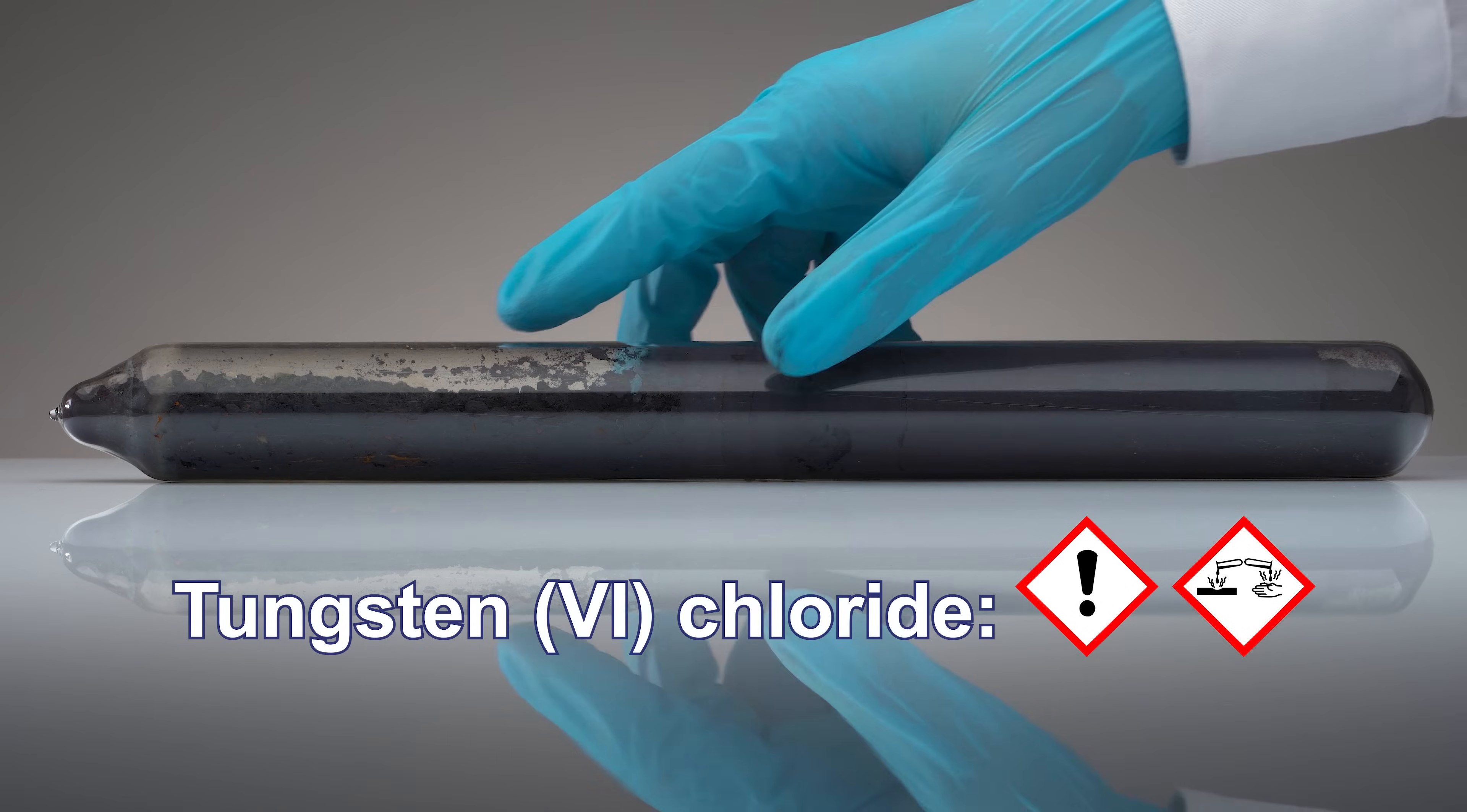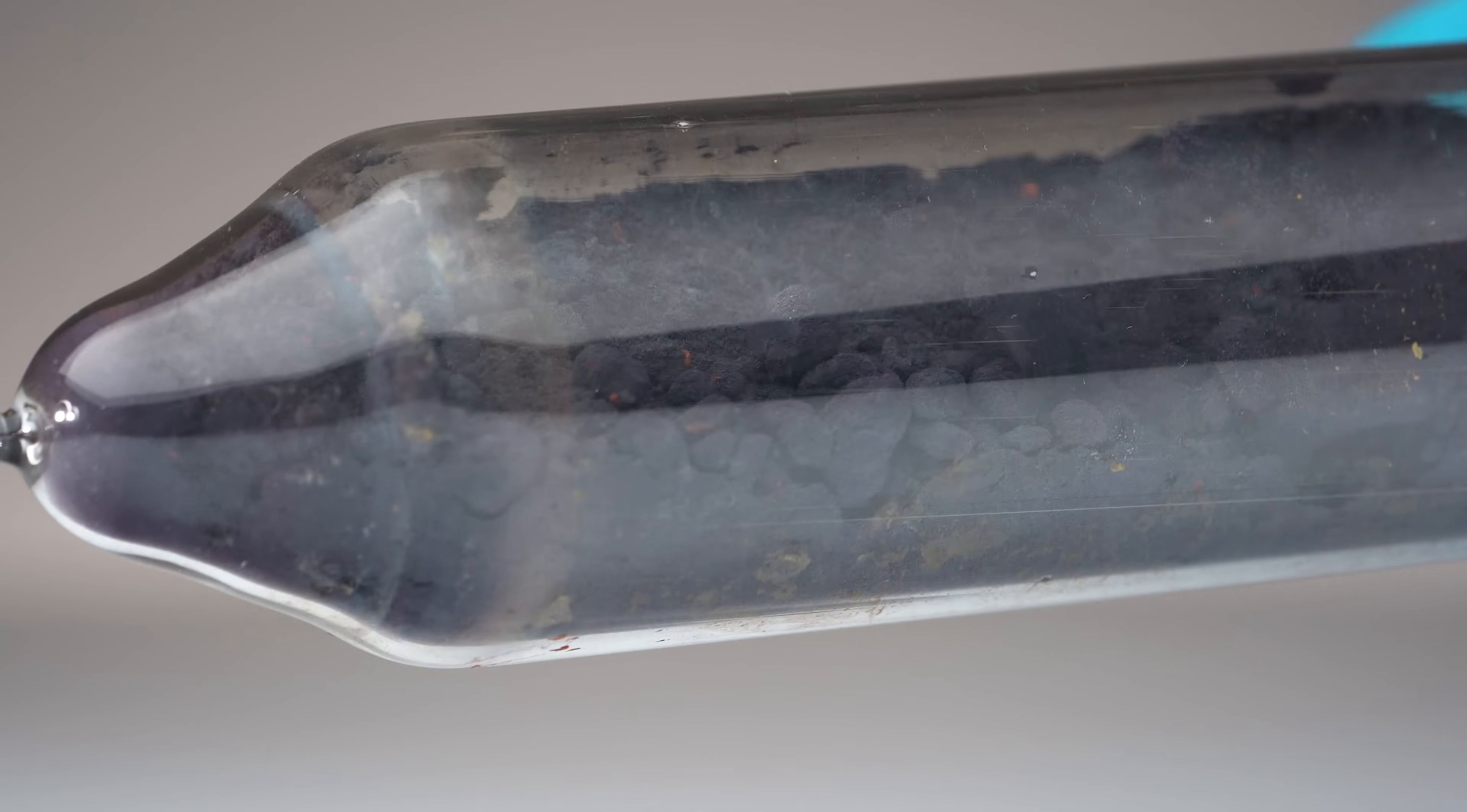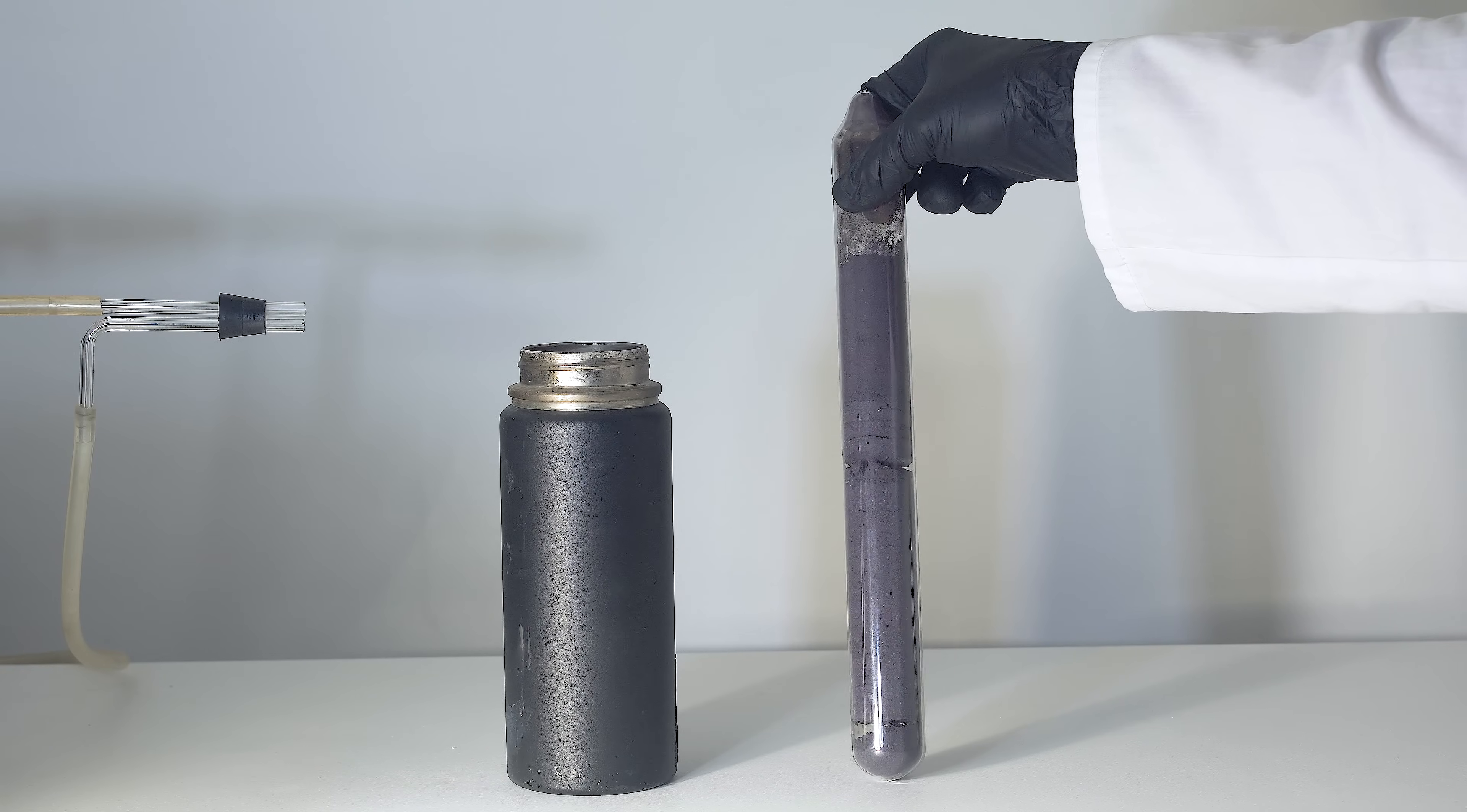This large ampoule contains tungsten hexachloride, existing as a volatile solid under standard conditions. It's an important starting reagent in the preparation of tungsten compounds. To prevent moisture from reacting with it, it's best stored in a sealed ampoule, much like other anhydrous transition metal chlorides.